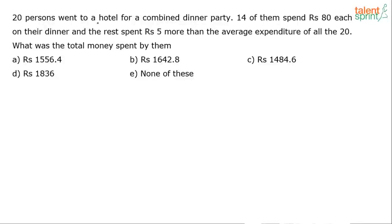The question says 20 persons went to a hotel for a combined dinner party. 14 of them spent Rs 80 each on their dinner, and the rest spent Rs 5 more than the average expenditure of all the 20. What is the total money spent by them? Options have also been given to us.